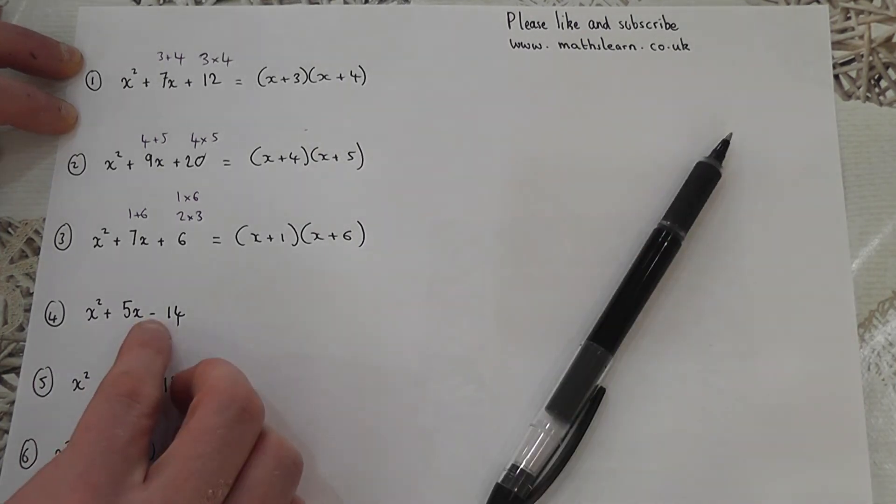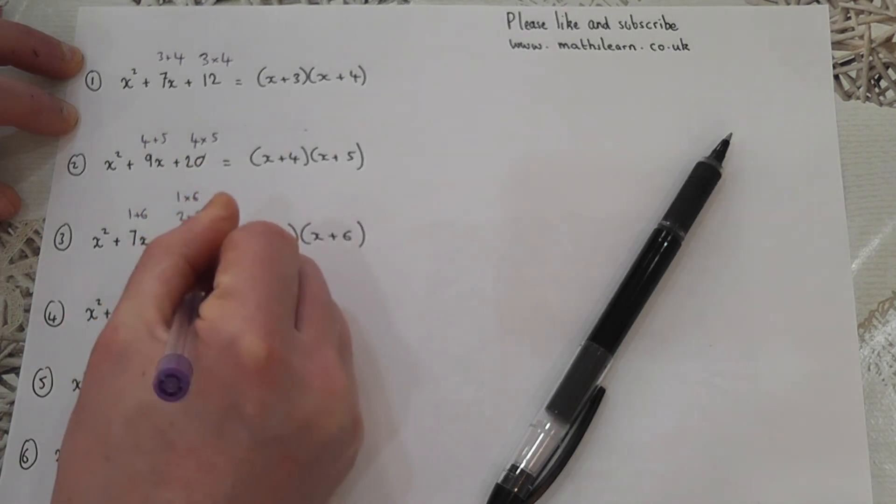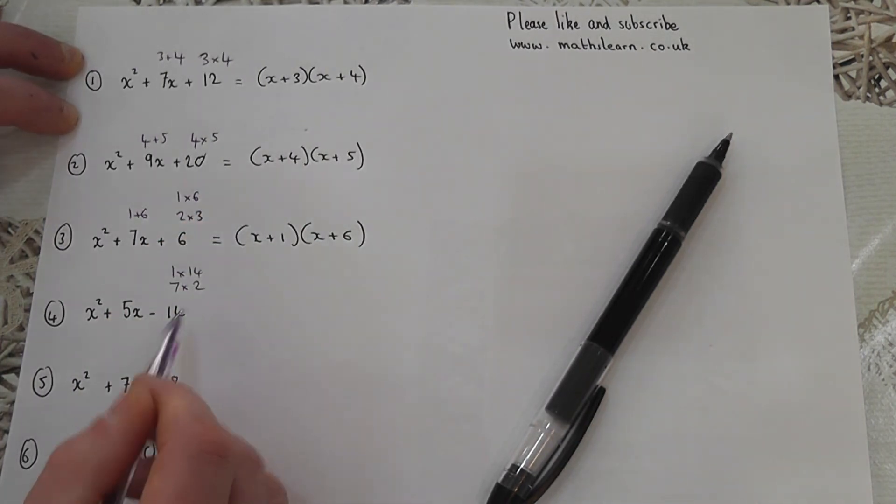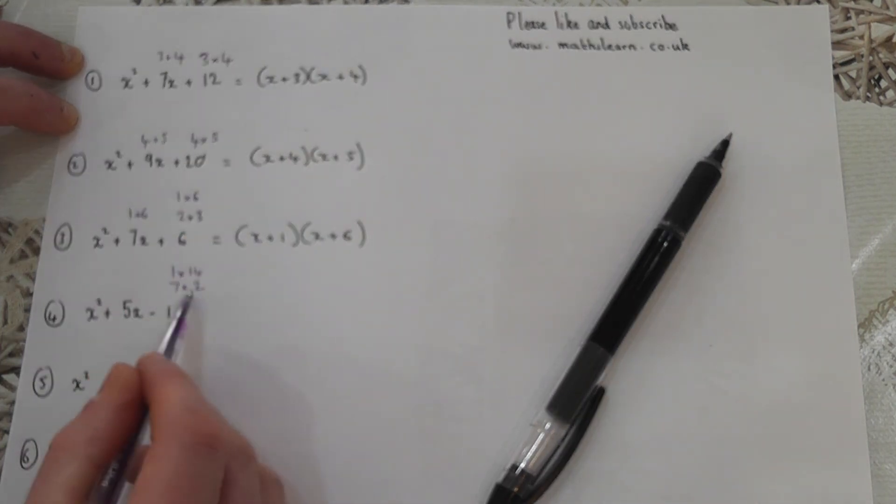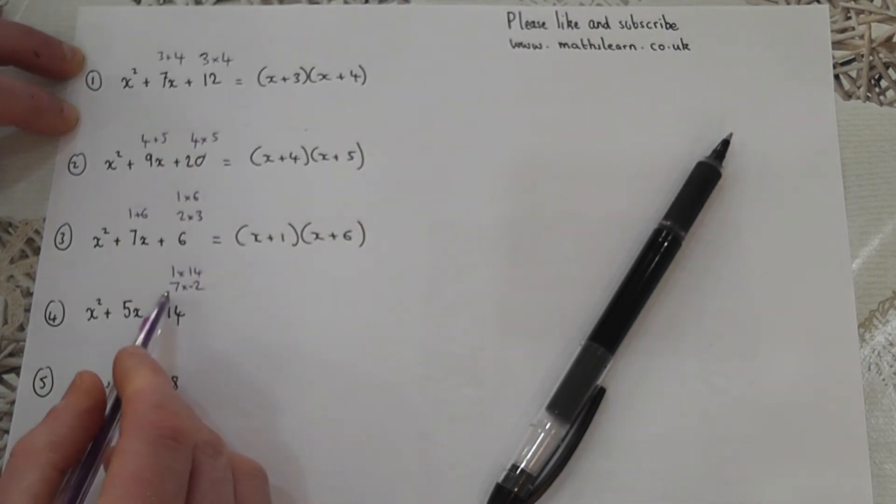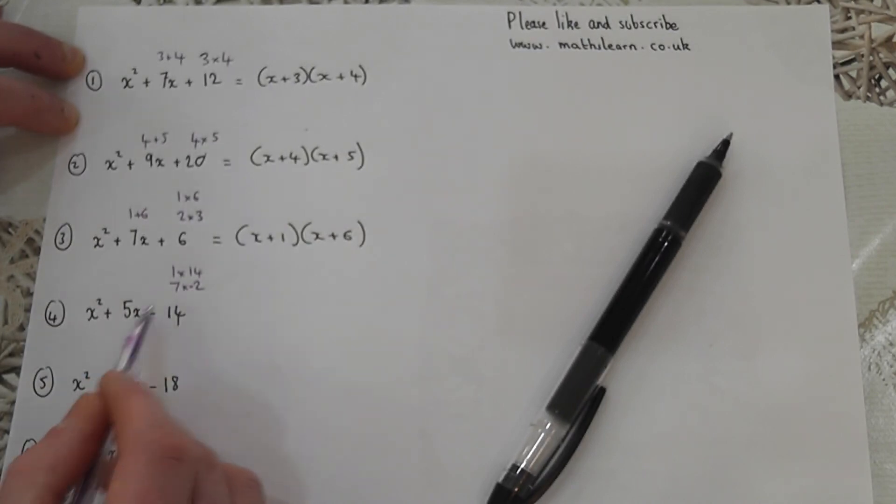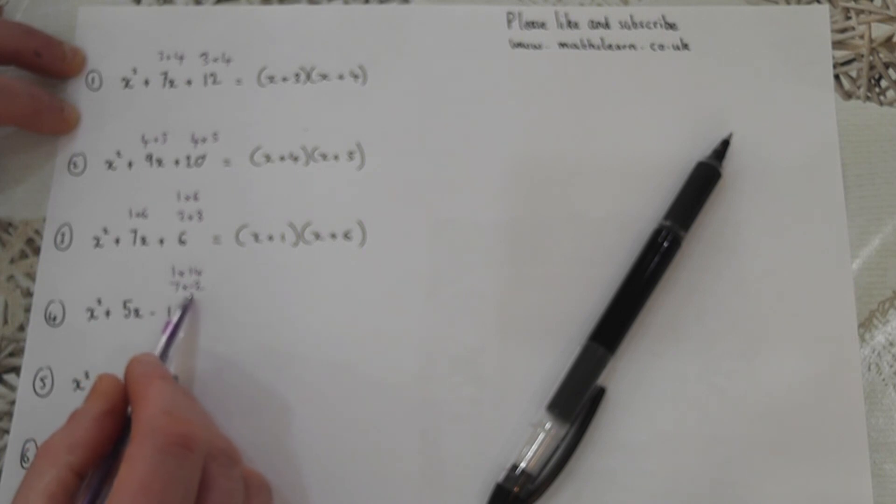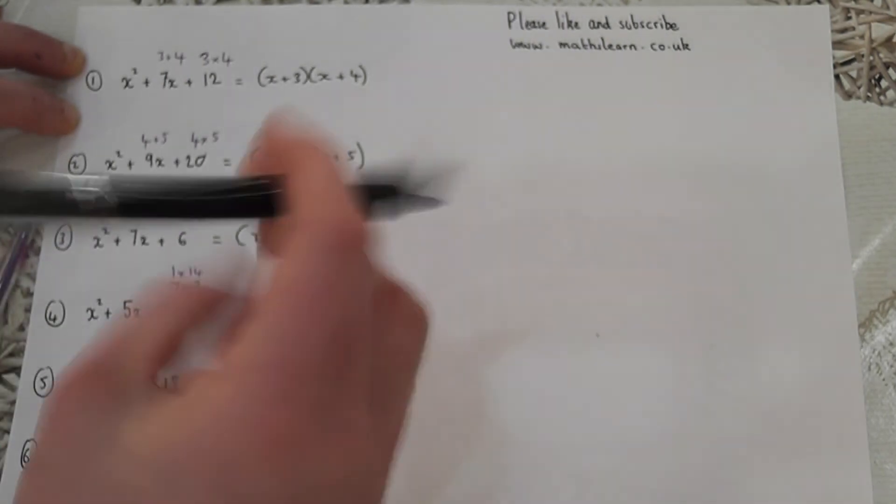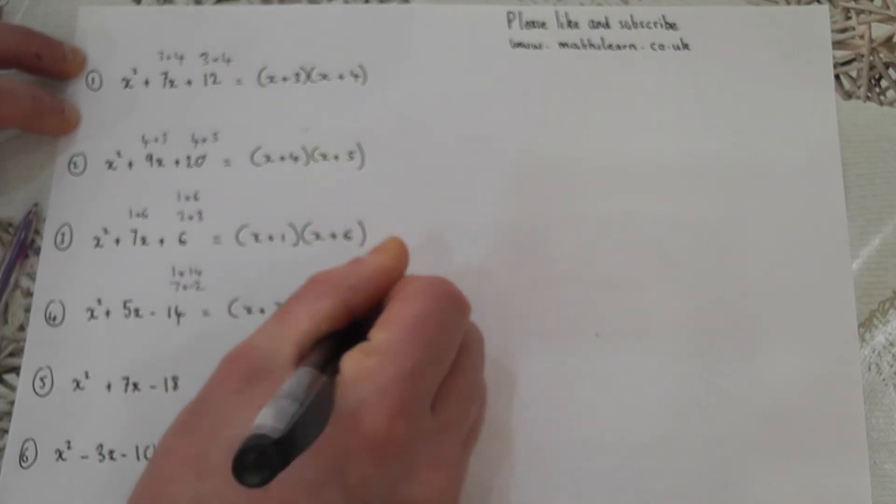The fourth one's got a negative in. We approach this in the same way. Factors of 14 are either 1 times 14 or 7 times 2. But it's a minus 14, so one of the numbers in the factor pairs has got to be negative. If I make the 2 negative, then 7 times minus 2 is minus 14, and 7 take away 2 is positive 5. So the answer is x plus 7 and x minus 2.